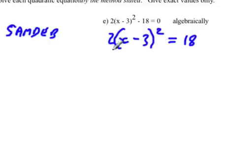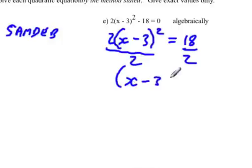So now we have to divide both sides by 2. So x minus 3 squared is equal to 9.